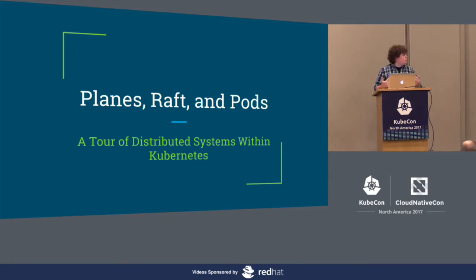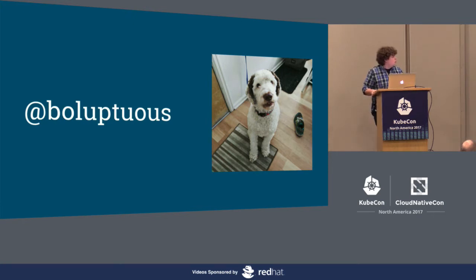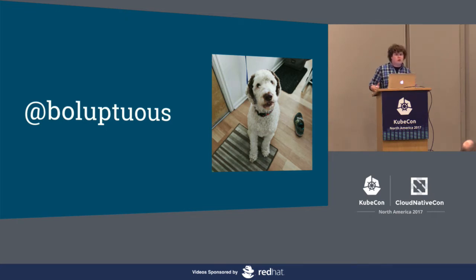It's going to be a tour of distributed systems within Kubernetes. So a little bit about me. Like any millennial, I've got to list my Twitter handle first. I am voluptuous on Twitter. Bo Ingram was taken, so I had to get fancy. That's my dog, Ernie, on the right. He is universally recognized as 'the man.' I considered taking out all my slides and just showing pictures of him, but I figured you all would leave and it probably wouldn't be good.